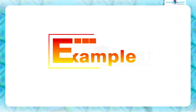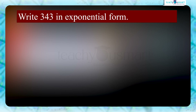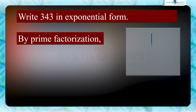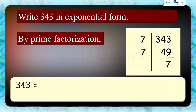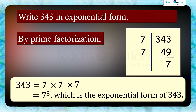Let's see an example: write 343 in exponential form. Here we have to write 343 in exponential form. For that, first we factor 343 using primes. That is, 343 equals 7 multiplied by 7 multiplied by 7 equals 7 cubed. This is the exponential form of 343.